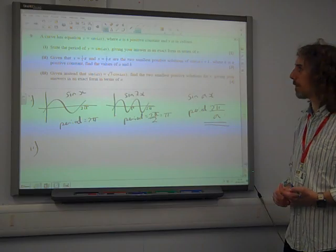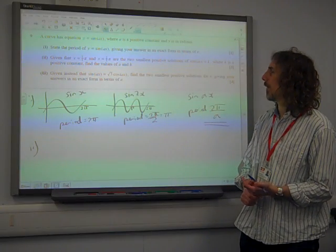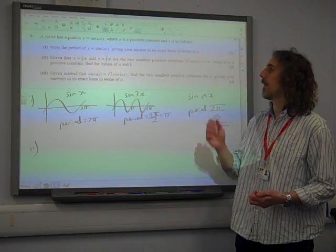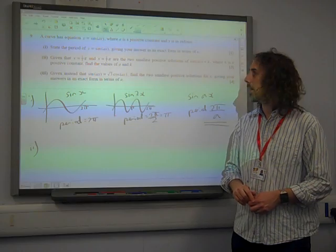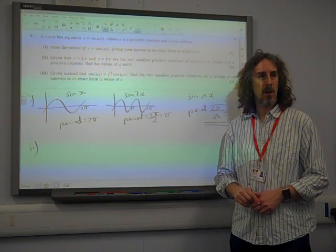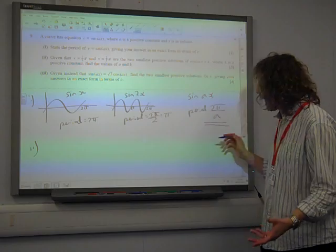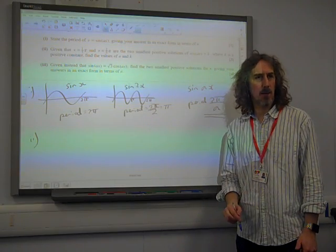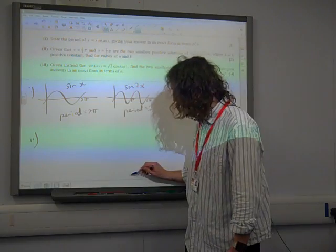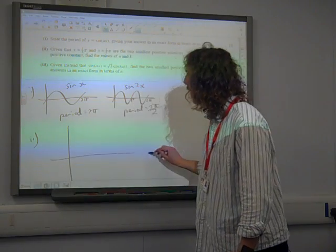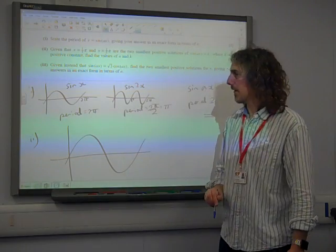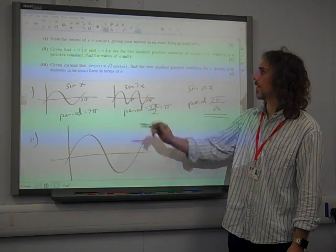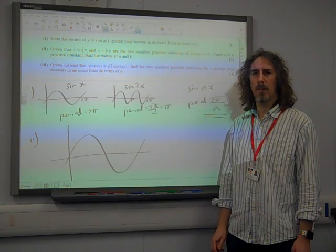Given that x equals π/5 and x equals 2π/5 are the two smallest positive solutions of sine ax equals k, where k is a positive constant, find the values of a and k. My immediate reaction to this question was I want to see what this looks like as a graph. Here we have a sine curve, and the two smallest positive solutions are π/5 and 2π/5.